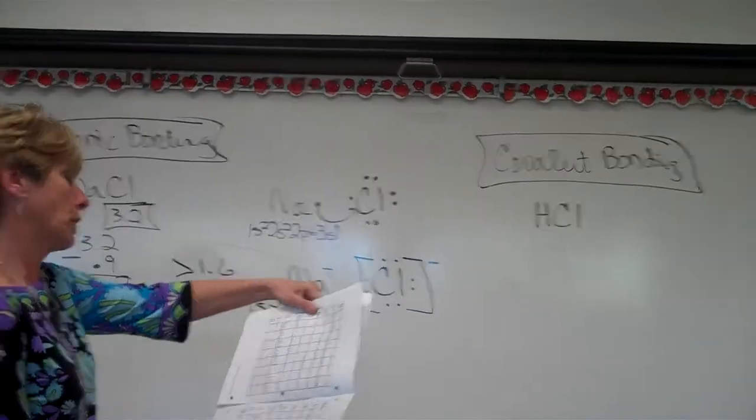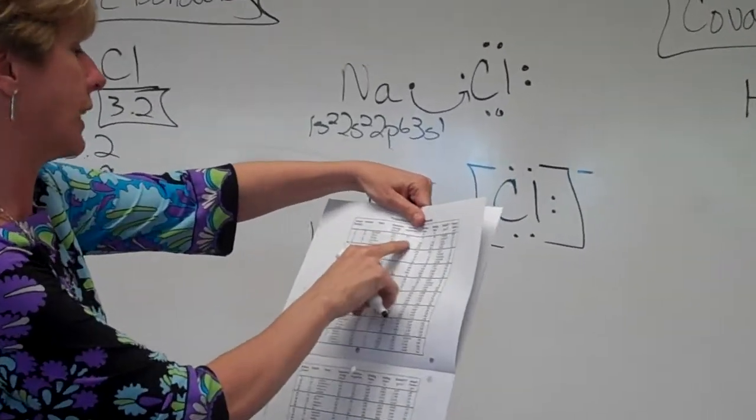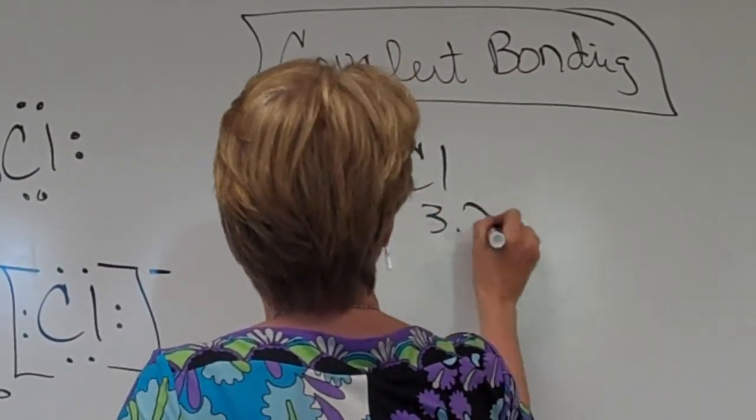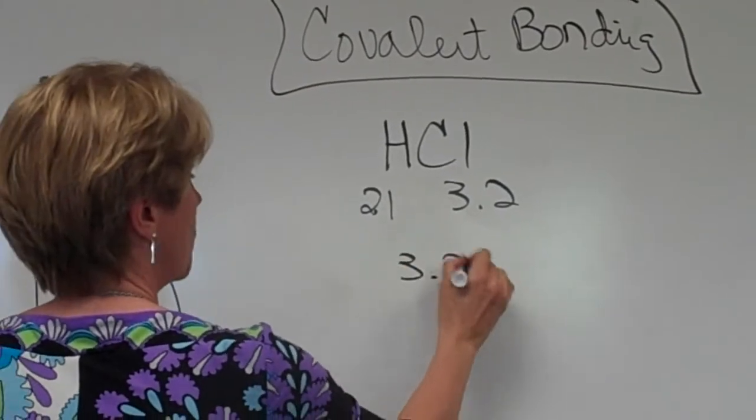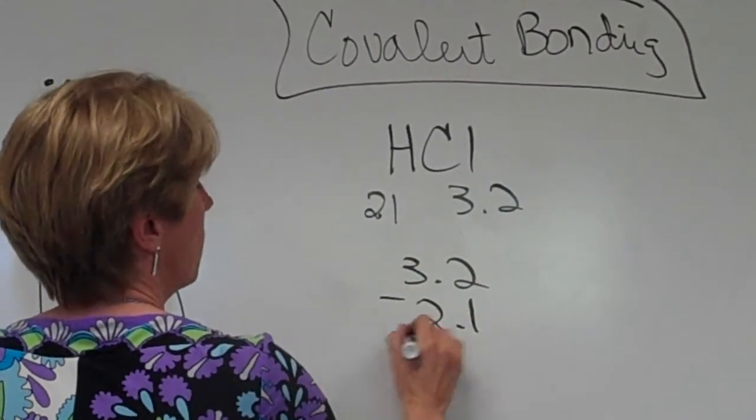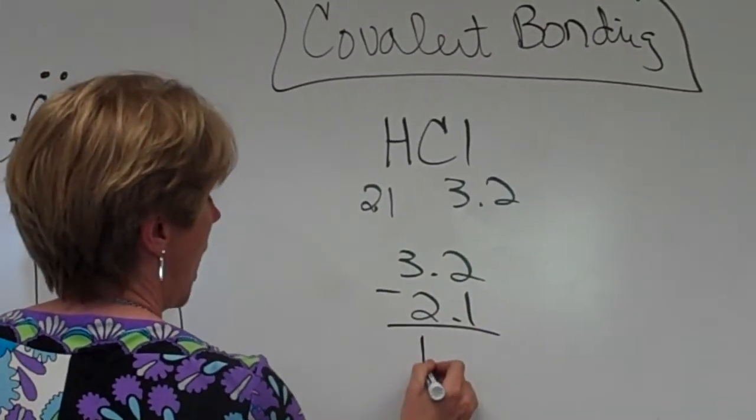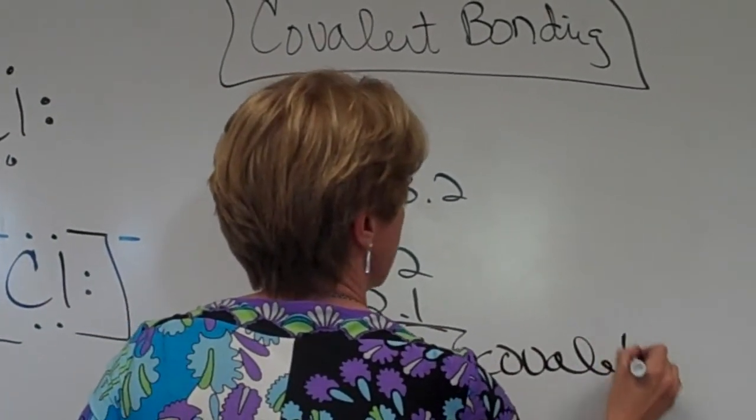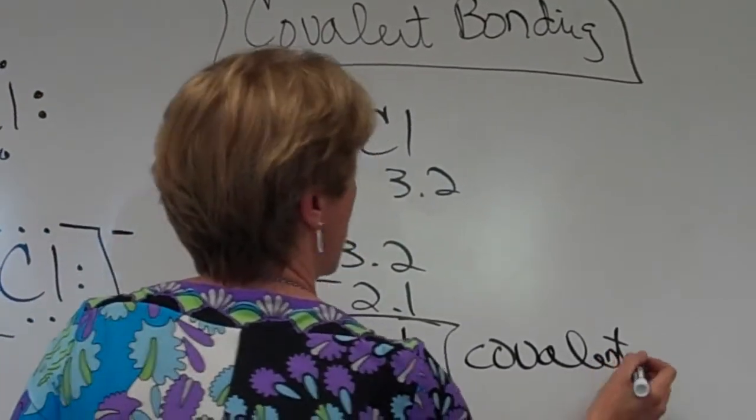Again, we look up the electronegativity of hydrogen. Hydrogen is 2.1. Chlorine is 3.2. When I subtract 2.1 from 3.2, I get 1.1. This is a covalent bond. Covalent bonding.